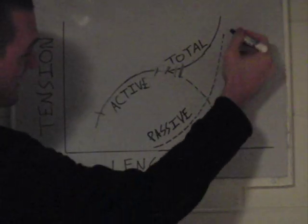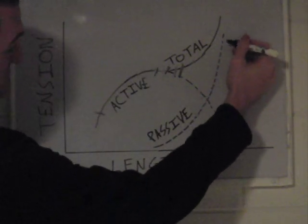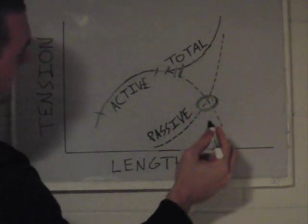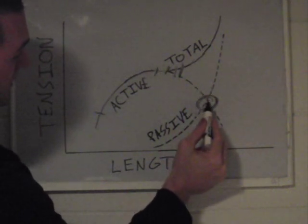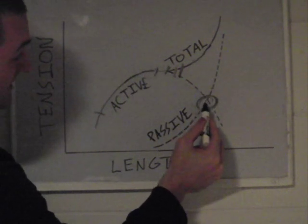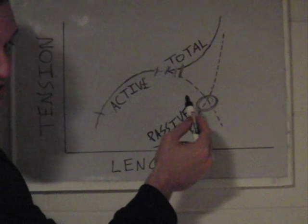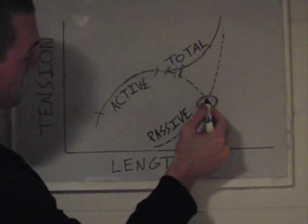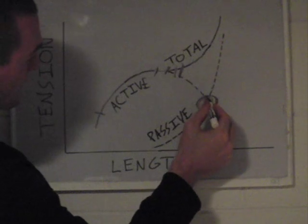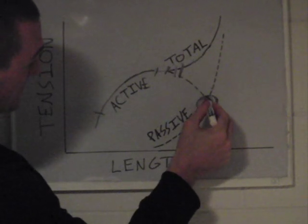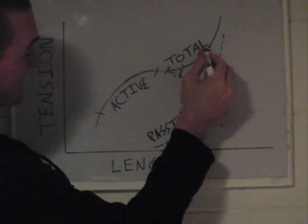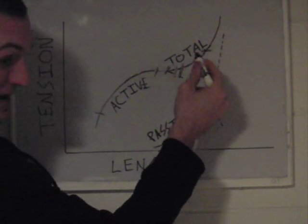Most people probably don't reach extreme tension during stretching — they're probably somewhere in the middle of the passive tension range. At that point you still have a fair amount of active tension if you choose to generate it. That's why PNF stretching is so painful: if you stretch your muscle and then contract it, you're adding active tension to your passive tension, and that puts you up very high on the total tension curve. That's a lot of tension — that's why it hurts so much.